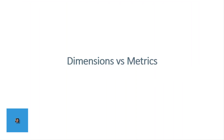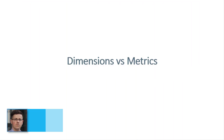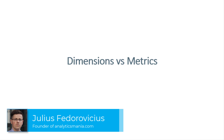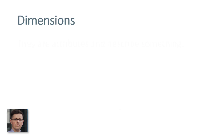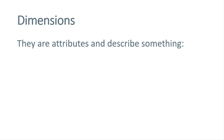Before we continue, I wanted to give you a quick introduction to metrics and how they are different from dimensions. This applies not only to Google Analytics, but to all analytics tools in general. Dimensions are attributes of something — for example, attributes of a product, attributes of an event, attributes of a user — and they describe something.